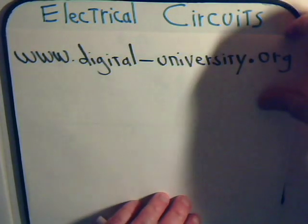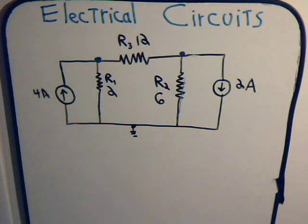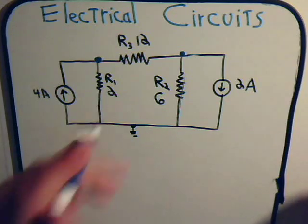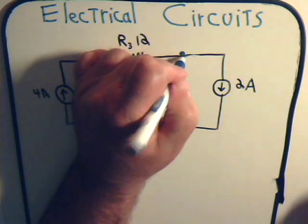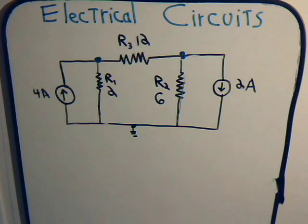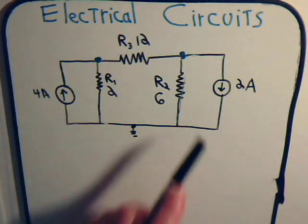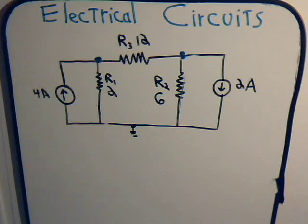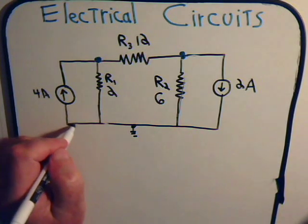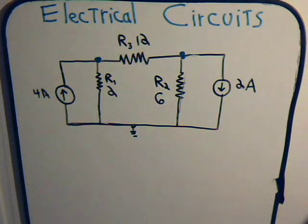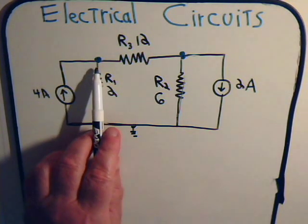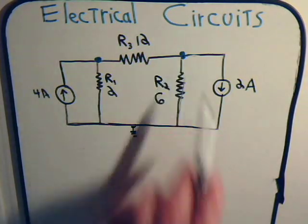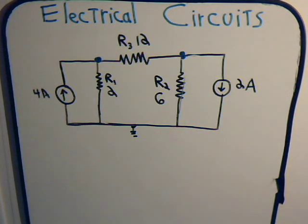Here in this video, we want to consider this network where we have two current sources, three resistors, and there are three nodes in this circuit. One is down here where the circuit is grounded, then up here we have a node, and over here another node. A node is just where different branches of the circuit come together.